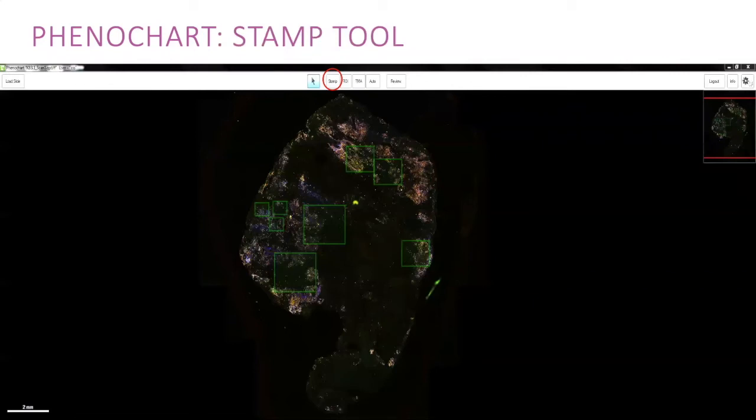Alternatively, if you have a very large tissue section and are only interested in acquiring certain regions of your sample, you can use the stamp tool to select your MSIs. You have the option of a 1x1 stamp, a 2x2 stamp and a 3x3 stamp which is equivalent to 9 MSIs.